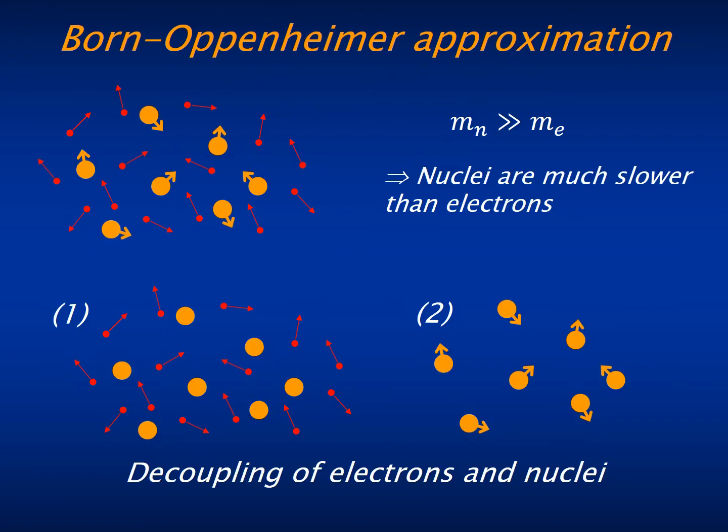The first basic approximation is Born-Oppenheimer. Although all the particles in the system move simultaneously influencing each other, the nuclei are much heavier than the electrons.